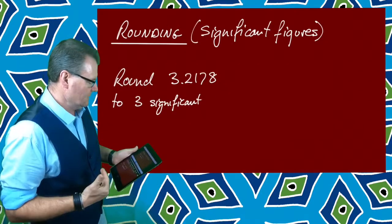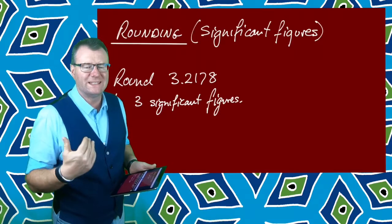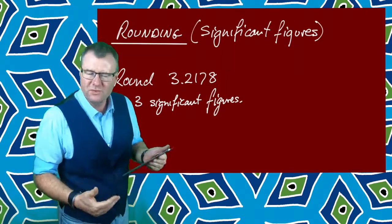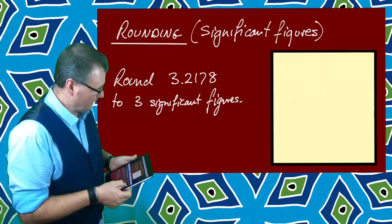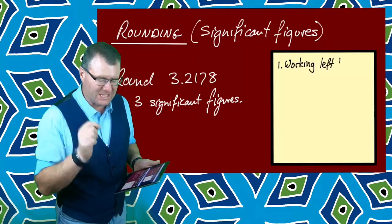What if I asked you to round 3.2178 to three significant figures? The process is kind of similar to decimals but there are a few important differences. Let's see the first step in doing this.